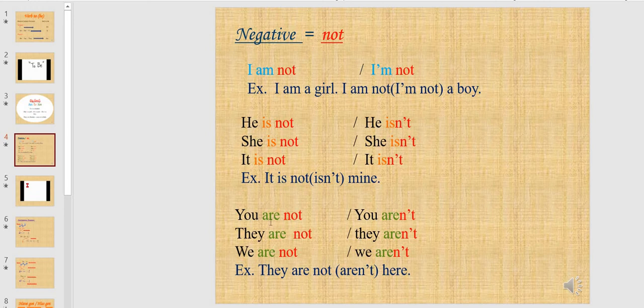Here we have the plural subject pronouns. We have you, they, and we. You are not — short form: you aren't. They are not — short form: they aren't. We are not — short form: we aren't. For example, they are not here, or they aren't here.